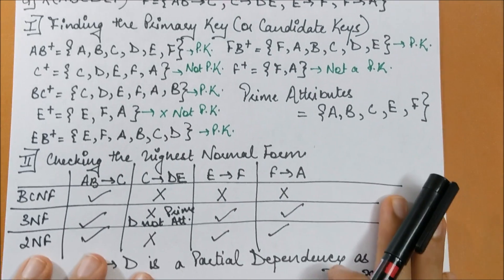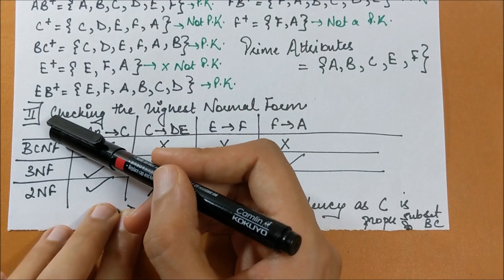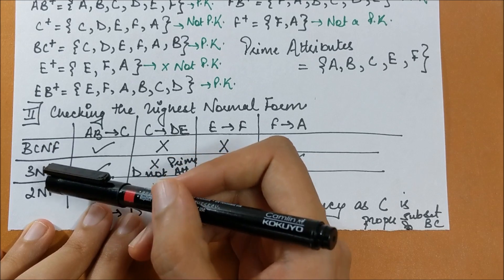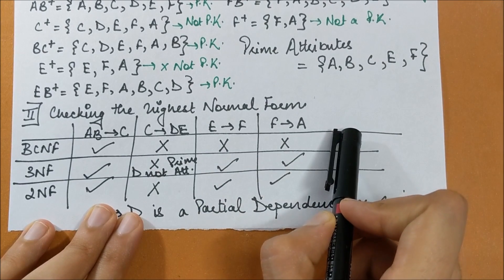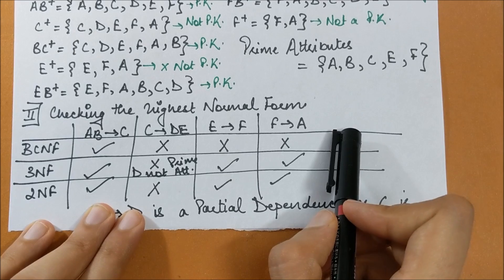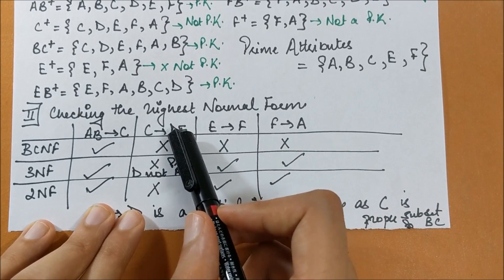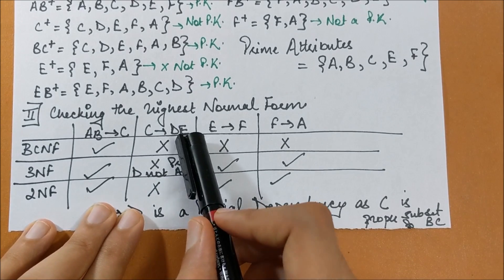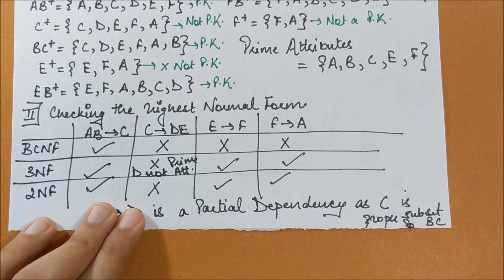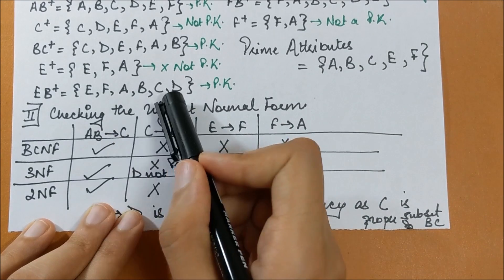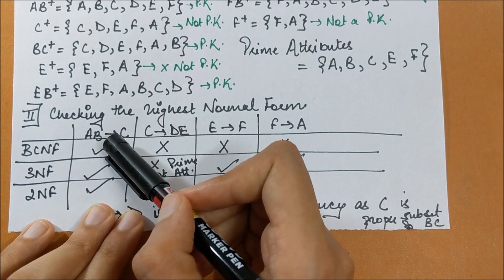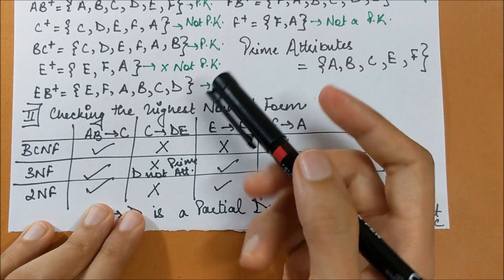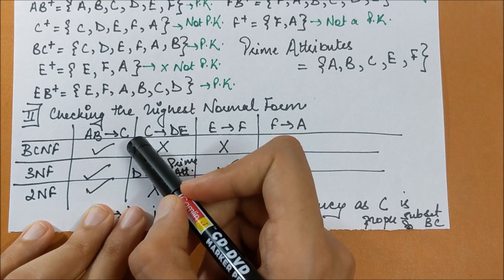The second step is to check the highest normal form. We set up a table with normal forms (BCNF at the top) in the left column and functional dependencies in the right columns. For AB → ... : AB is a primary key, so this is in BCNF. I tick-mark all rows below it since satisfying BCNF implies satisfying all lower normal forms.